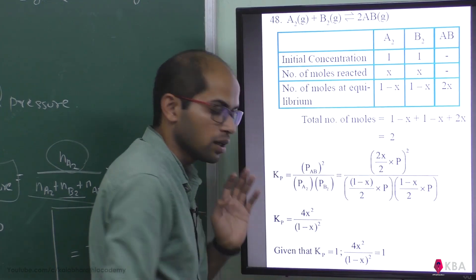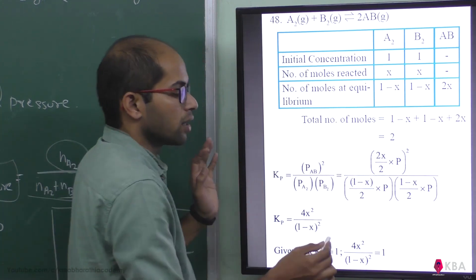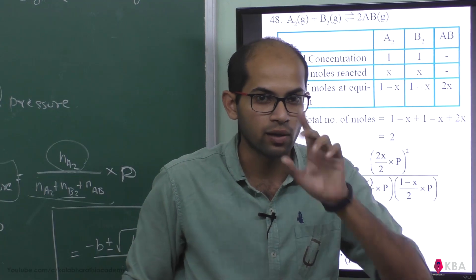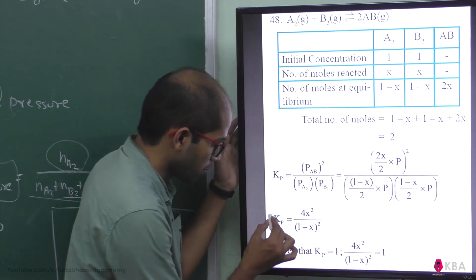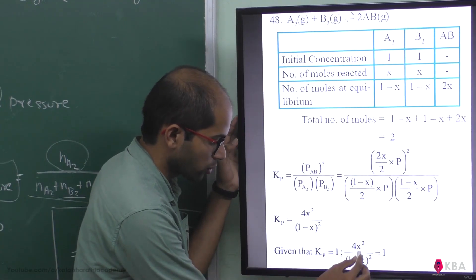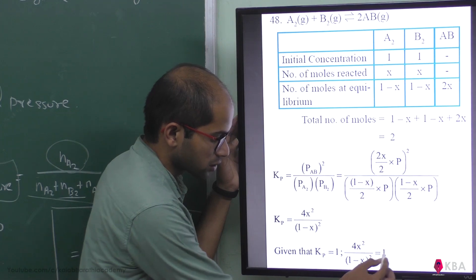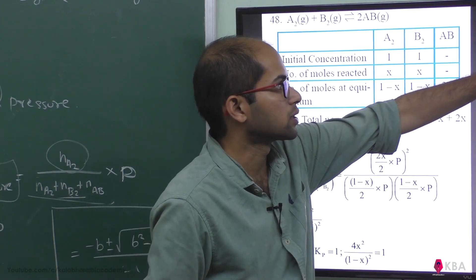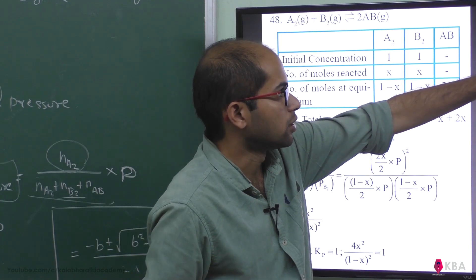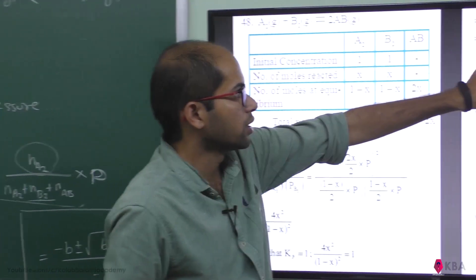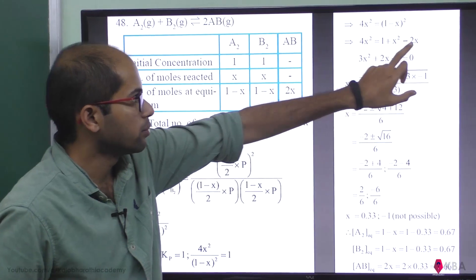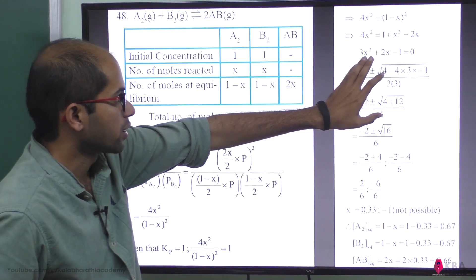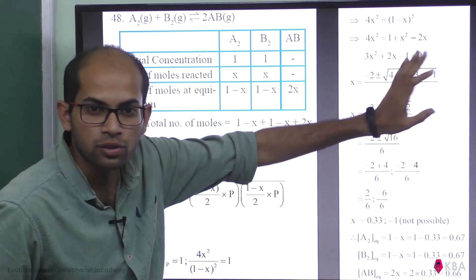So we have 4x² divided by (1 minus x)² equal to Kp, which is 1. Cross-multiplying gives 4x² equal to (1 minus x)², which expands using A² plus B² minus 2AB to give 3x² plus 2x minus 1 equals 0.